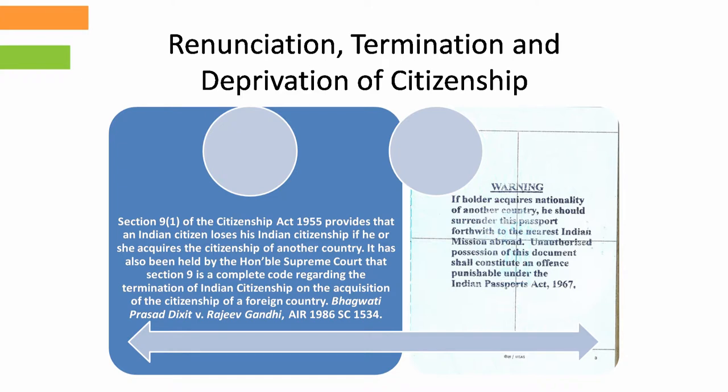Section 9, subsection 1 of the Citizenship Act 1955 provides that an individual Indian citizen loses his or her Indian citizenship if he or she acquires the citizenship of another country. It has also been held by the Honourable Supreme Court of India in the case of Prashad Dixit versus Rajiv Gandhi 1986 that Section 9 is a complete code regarding the termination of Indian citizenship on the acquisition of the citizenship of a foreign country.